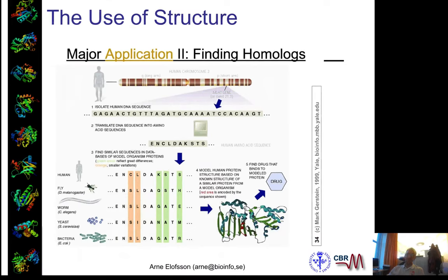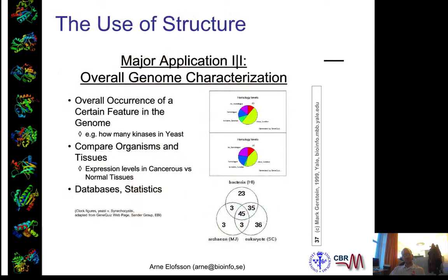Another application is finding homologs. This is becoming less important with the increase of sequence data, but for a long time there were many cases where homology between proteins wasn't recognized until the structures were seen to be very similar. Now, with larger sequence databases and better homology detection methods, we often identify homology even without using structure. Structure was also used for protein family characterization, as it was used to define domains for protein families.